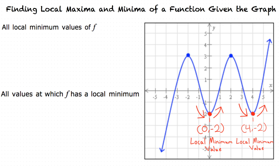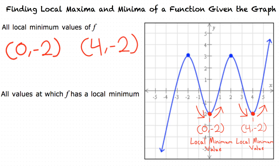Now that we have the local minimum points, how do we find which values are local minimum values of f and which are values where f has a local minimum? For the first part, we are looking for values of function f that are local minimum values. To find these, we look at the y-values of our local minimum points. Since our only y-value is negative 2, our answer is negative 2.